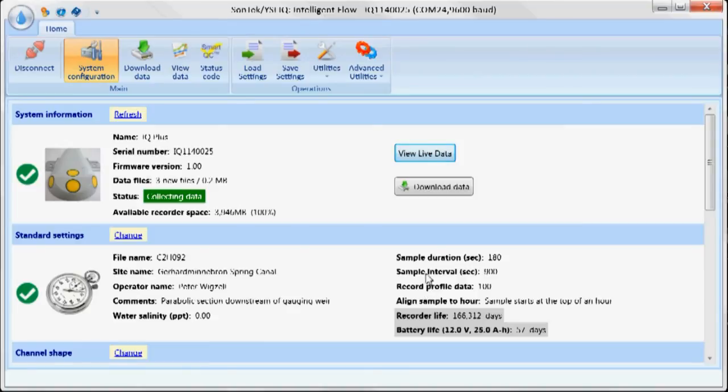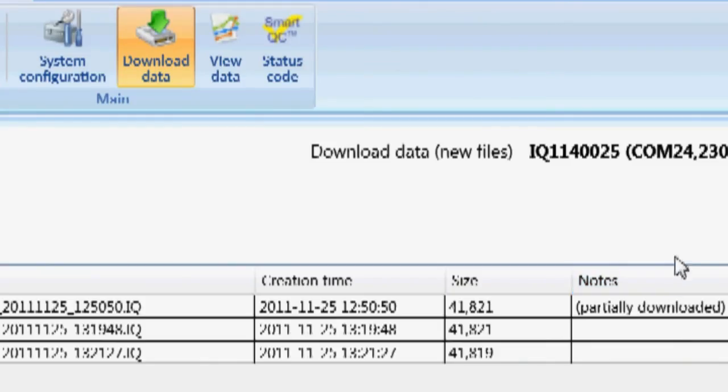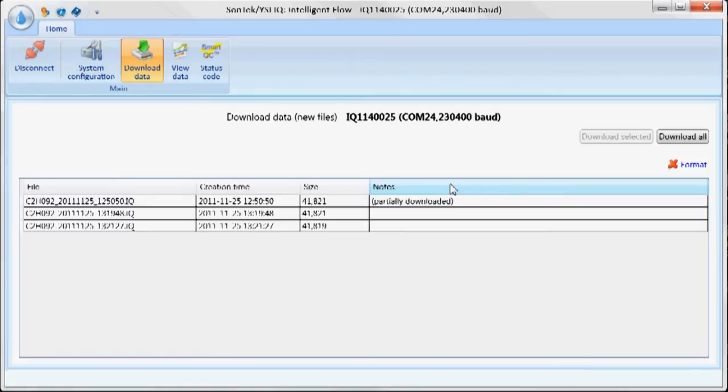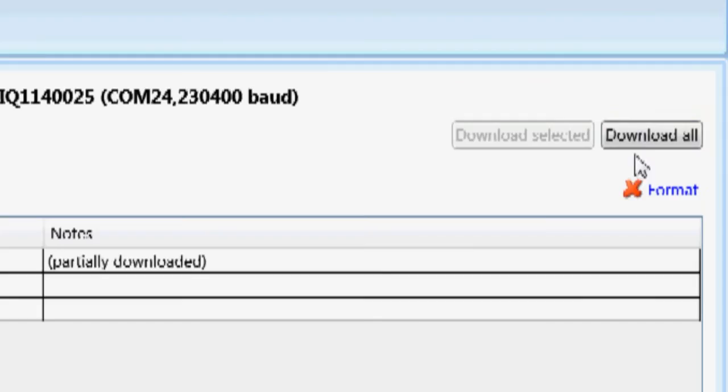One nice thing that we've done with this IQ is now, actually, while I'm collecting data, I can go out and download data. So I'll do that right now. So I have three new files. I'm going to click download data. Now, one thing, while I'm downloading this data, I'm still measuring. So I do not have to stop the instrument to download data. So I'll click download all.